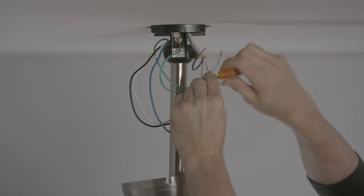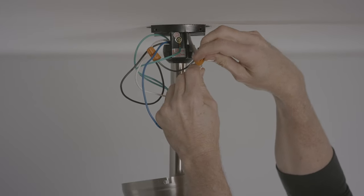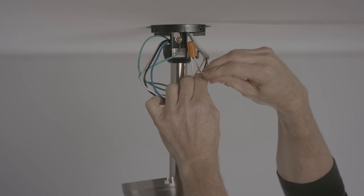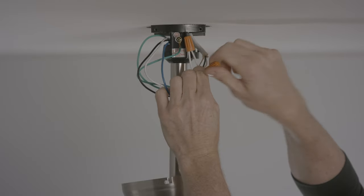To install, connect the green and grounding wires together, then the white wires together, then connect the fan's blue and black wires to the home's black and red wires. This configuration will run power to both your fan and your light kit.